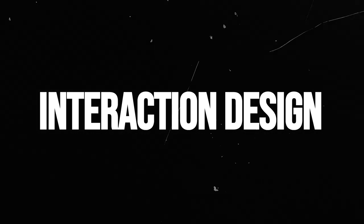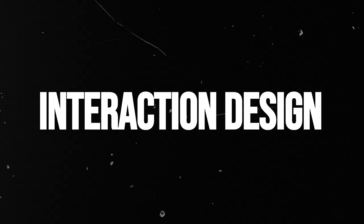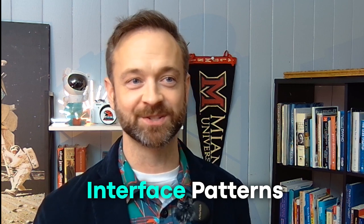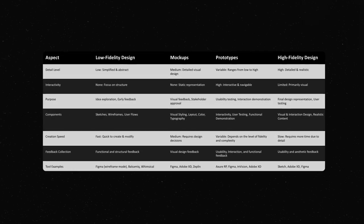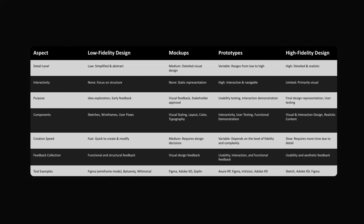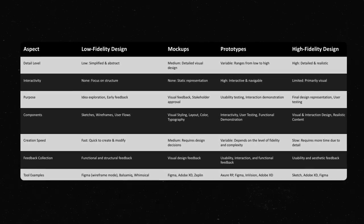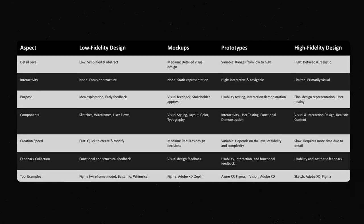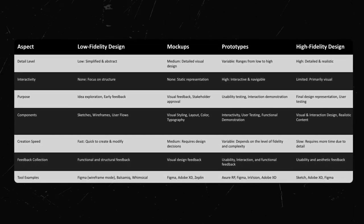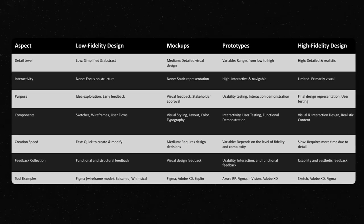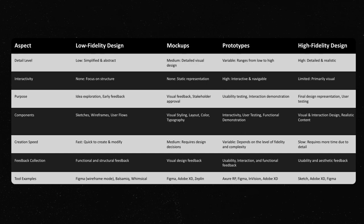Interaction design is designing how users interact with the interfaces. You're looking at interface patterns and consistencies, micro-interactions and animations, and wireframes and prototypes. The design deliverables go from low-fidelity design to mock-ups to prototypes and high-fidelity designs, and they all have different benefits depending on the size of your team and the speed at which you need to launch things.